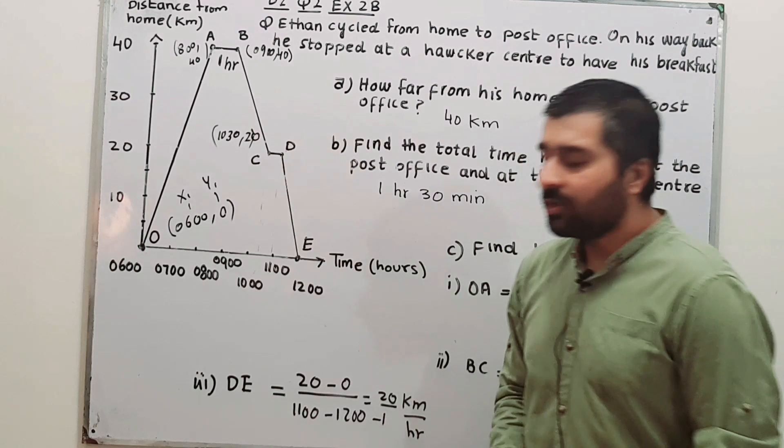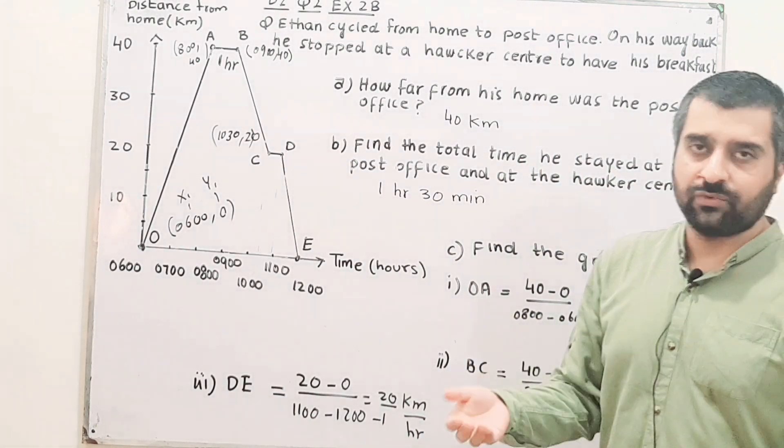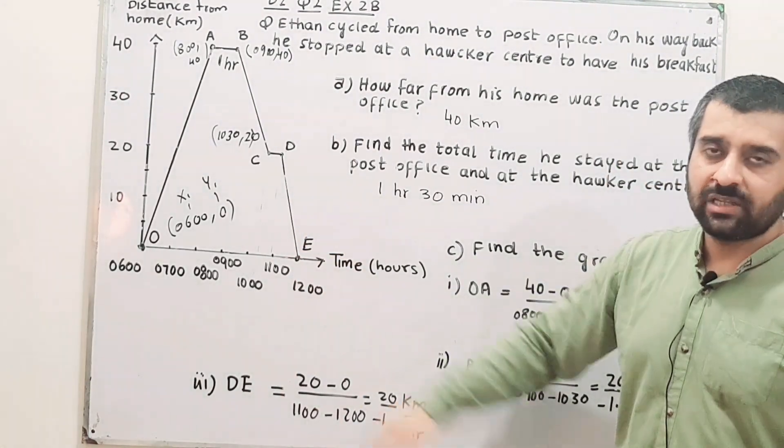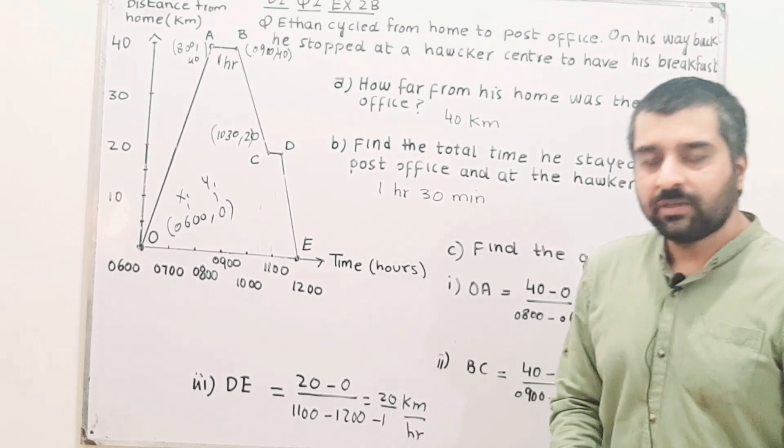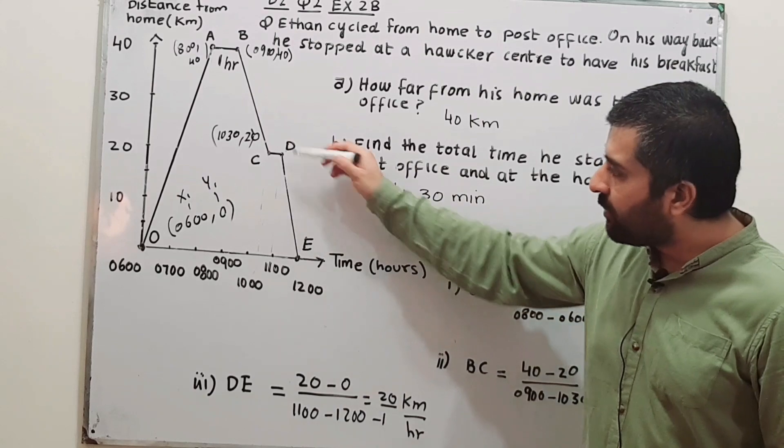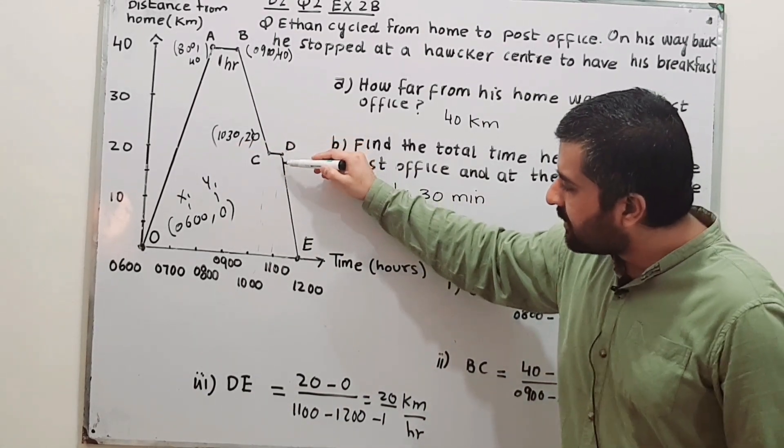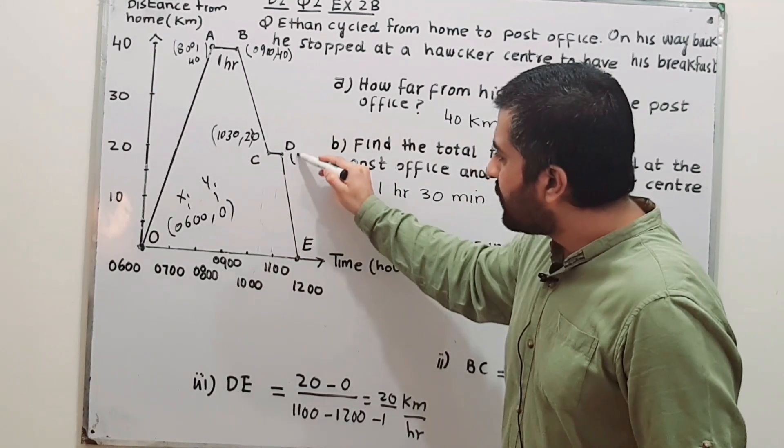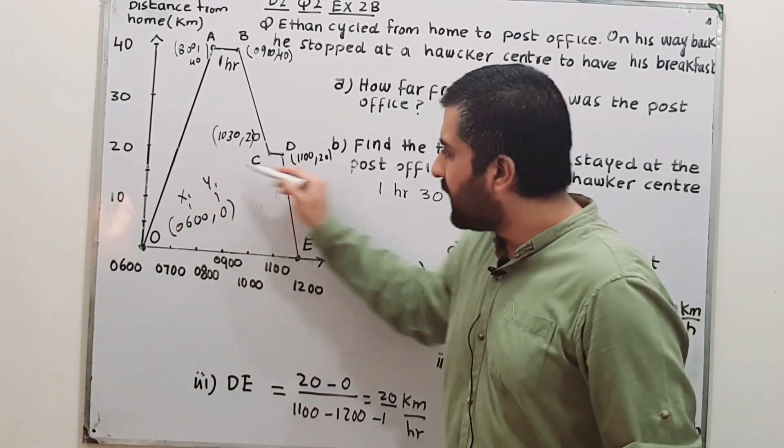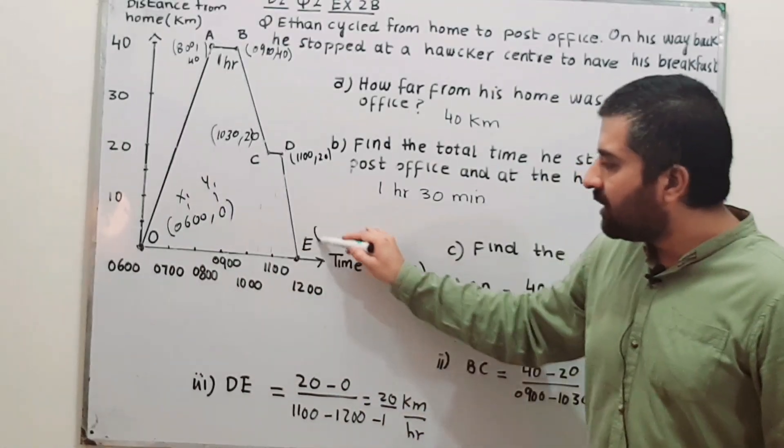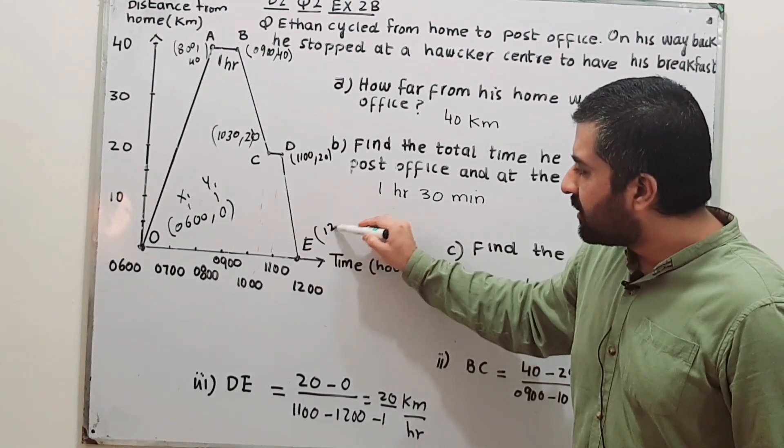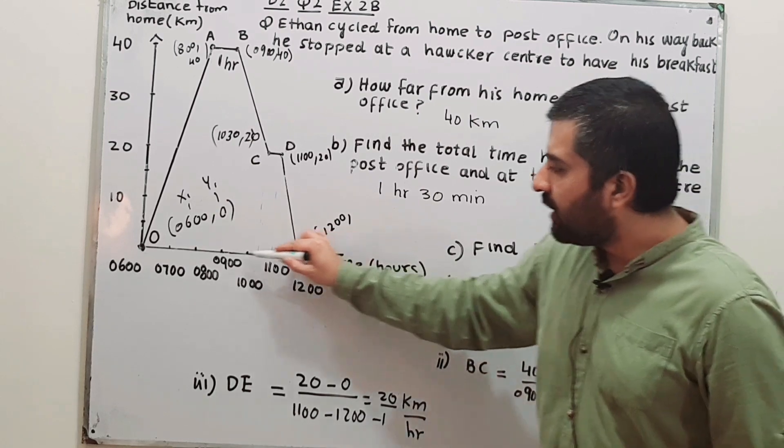Then from D to E, you can find the gradient in the same way by marking the coordinates of point D and point E, then using them in the formula y2 minus y1 divided by x2 minus x1. Coordinates of D are: the value for y is 20 and the value for x here is 11. So 11 hours and 20, the value for y, and the value for x is 11. At point E, we have the value for x is 12 hours, while value for y is 0.